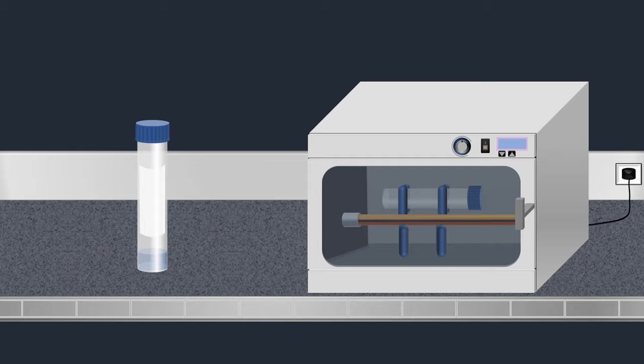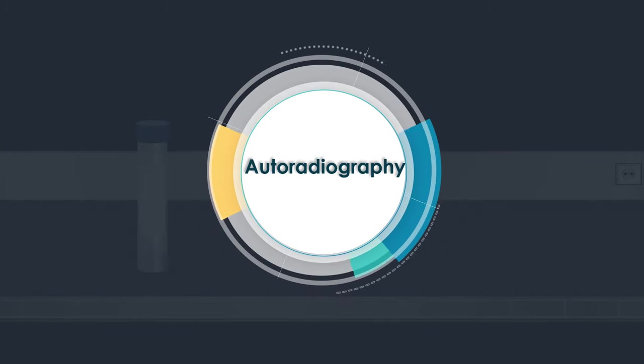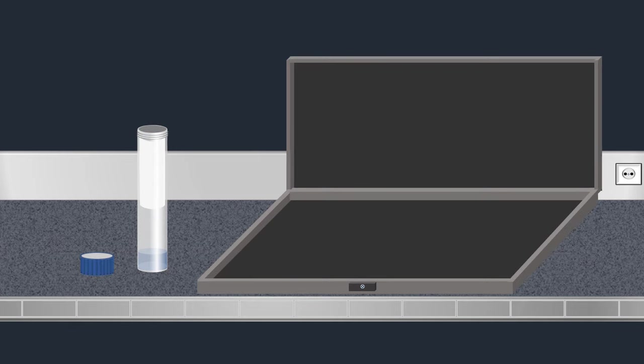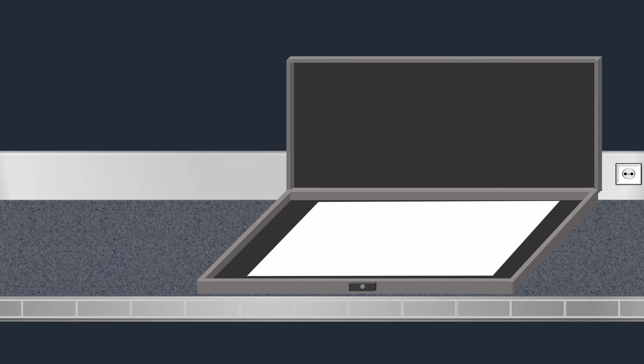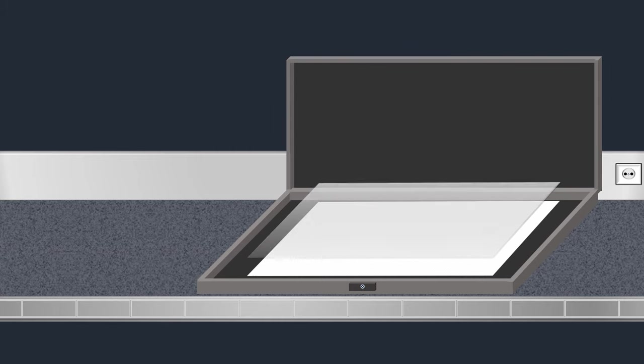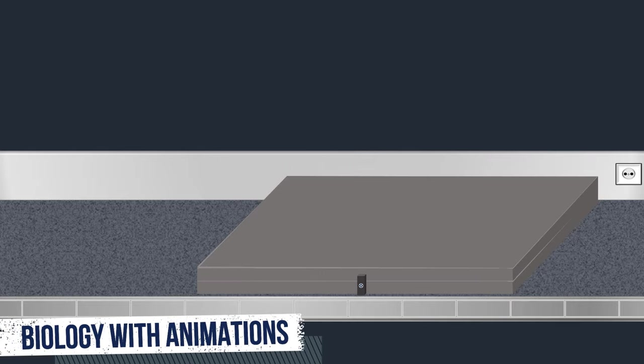After hybridization, an autoradiography method is carried out to identify the location of radioactively labeled DNA in the membrane. The southern blot filter is placed inside a light-proof cassette box. Then an X-ray film is laid over the top. The cassette is closed and left for several hours to several days.